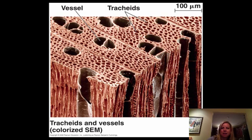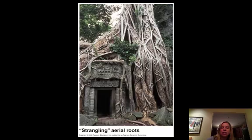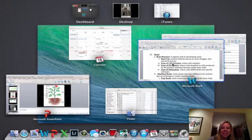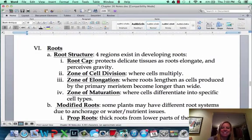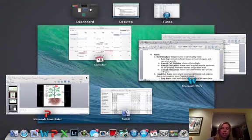In the xylem you're going to have vessels and tracheids. Now what we're going to get into is root structure. I'm going to show you a picture that has these four different zones that we're going to have in a root.